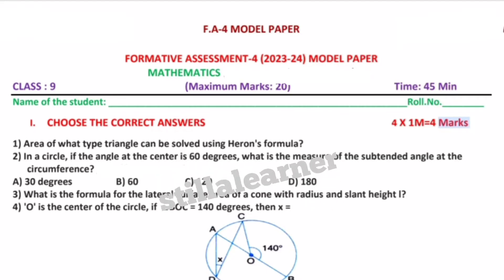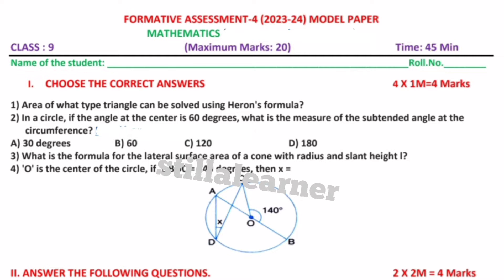This question paper carries 20 marks and time is 45 minutes. In the first Roman, we have to choose the correct answers. This Roman carries four marks, meaning each question carries one mark, so four multiplied by one is four marks.